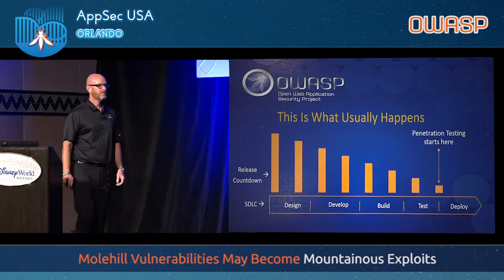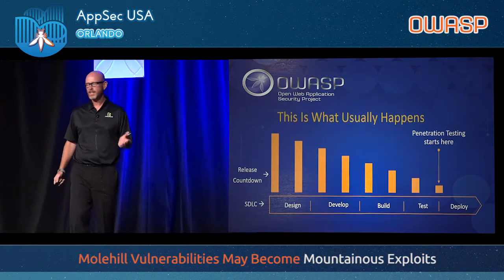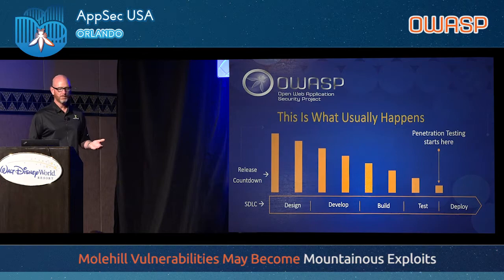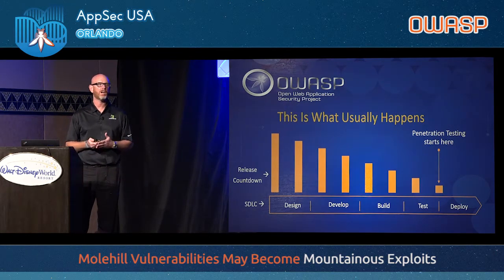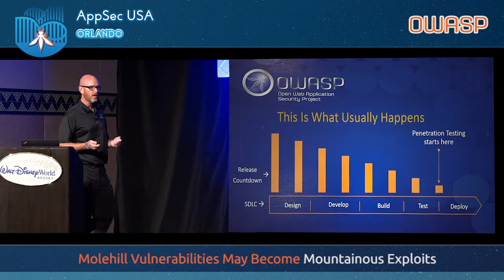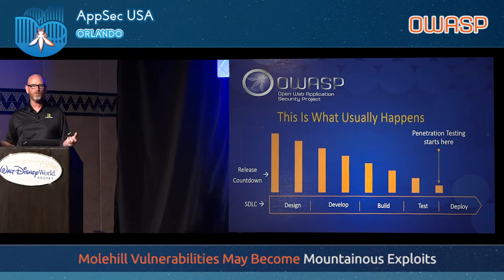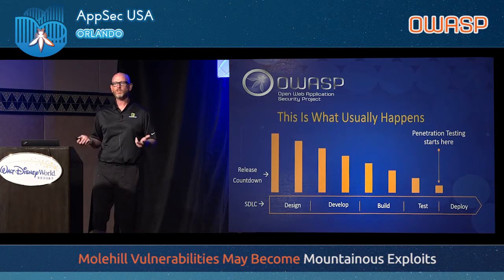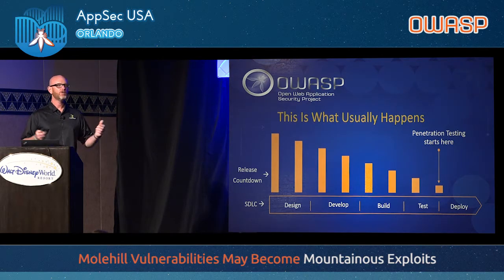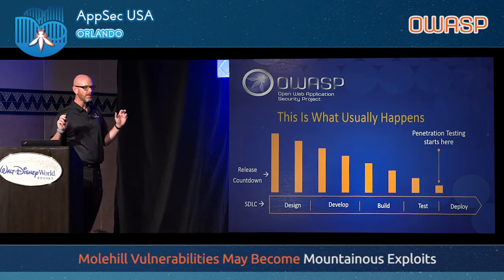To give evidence to this point: your SDLC is often depicted linearly across the bottom — design, develop, build, test, deploy — with a period at the end. But applications are living, breathing things. They never stop being in development. The moment you make one line of code change, that application is different and there's new risk. Sometimes the biggest vulnerabilities are introduced when you go outside the normal software development process — for example, a quick hotfix that bypasses normal checks can introduce risk.